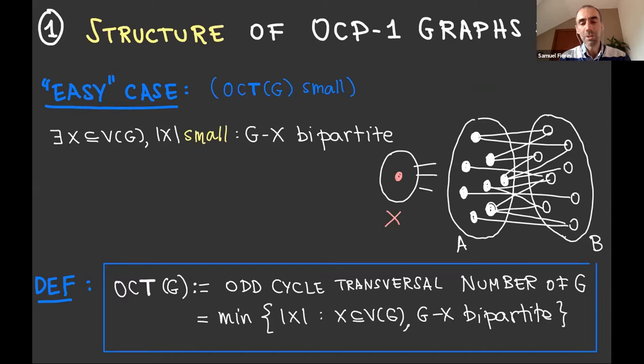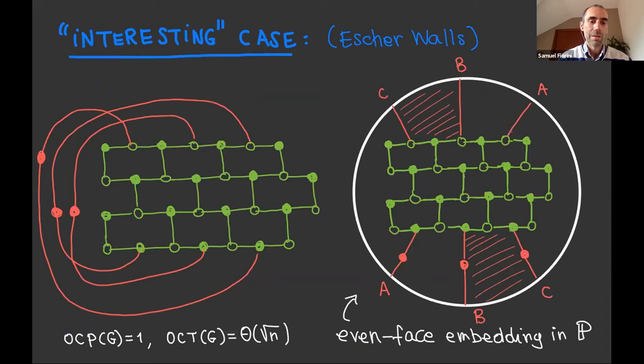Okay. Fortunately, or unfortunately, the graphs are not like that. So, there is also the interesting case. These examples are known as Escher walls. Okay. I'll try to walk you through that. You start with the bipartite and planar graph that's in green. So this is just a hexagonal grid. And then you add some edges that destroy both planarity and bipartiteness. Okay. So you get some graph that is not bipartite. And it's also not planar, although it's not very far from planar since you can draw it in the projective plane.